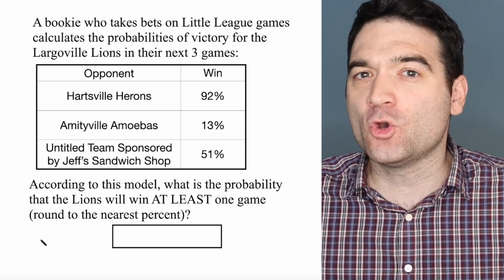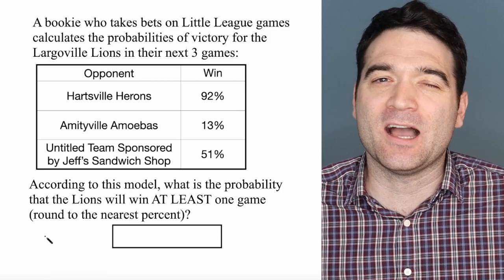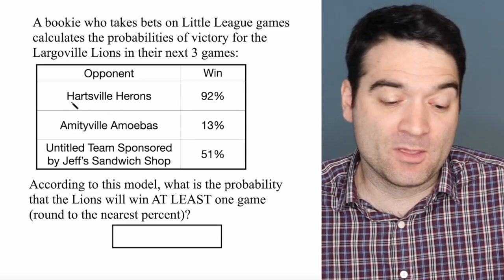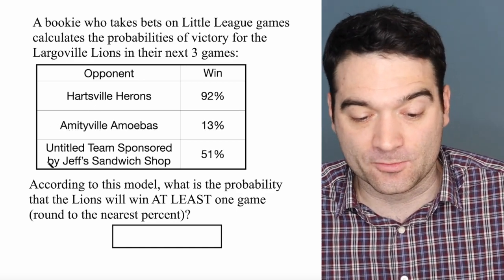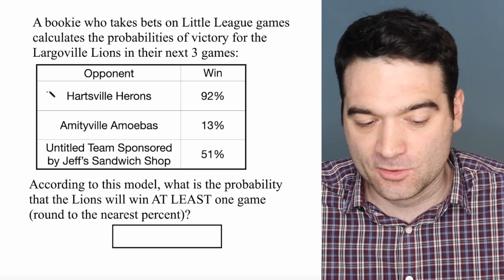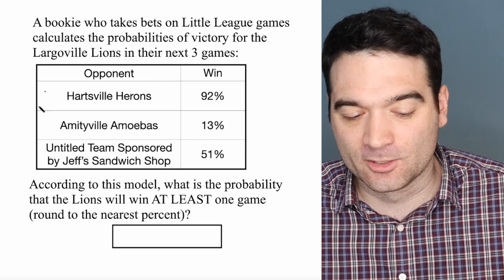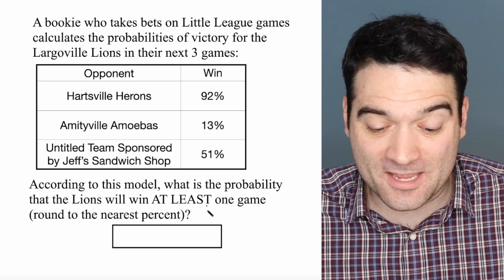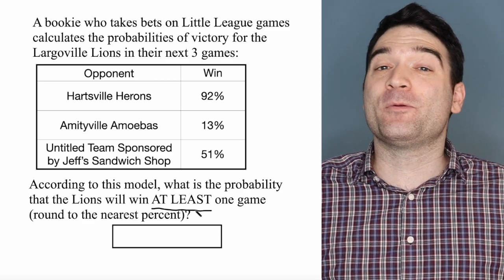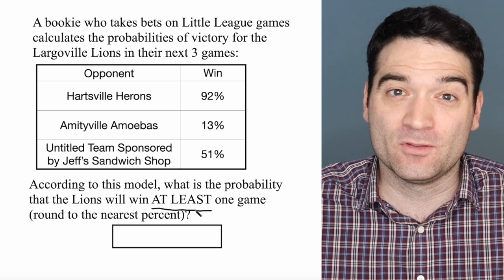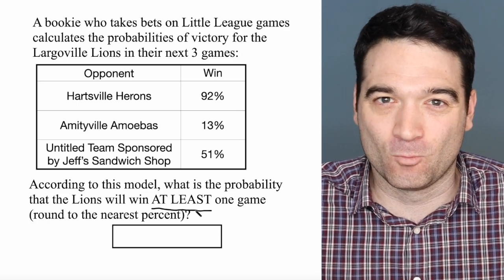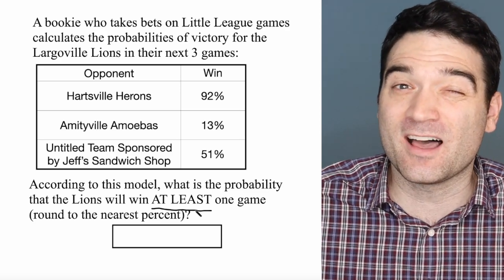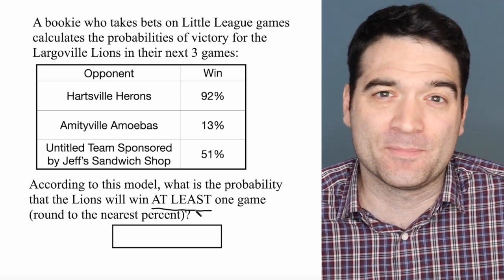So what we could do here is calculate the probability of every individual different scenario. So maybe we win the first one and lose the next two — that's one victory. We lose the first one, win the second, lose the third — that's one victory. Then lose, lose, win. But that's not enough, because we're asking about at least one game. We'd also have to calculate the probabilities of winning two games in all the different ways we could do that, then winning all three and adding those together. That's a lot of busy work — you could do it that way, but it would be a lot of busy work.